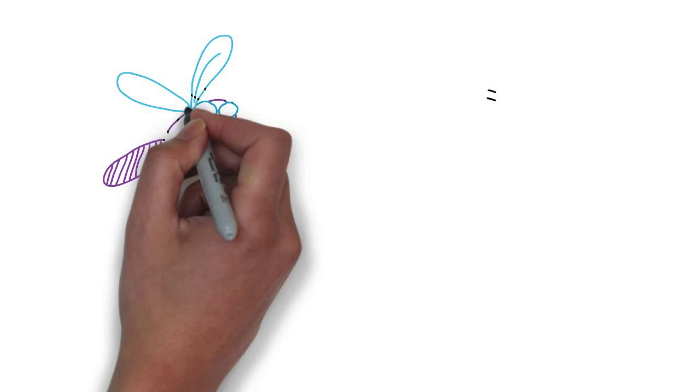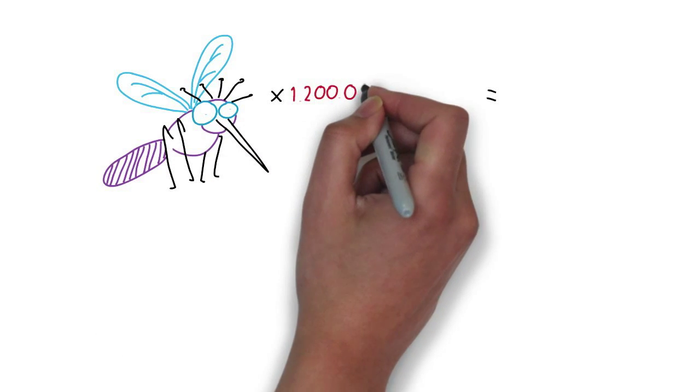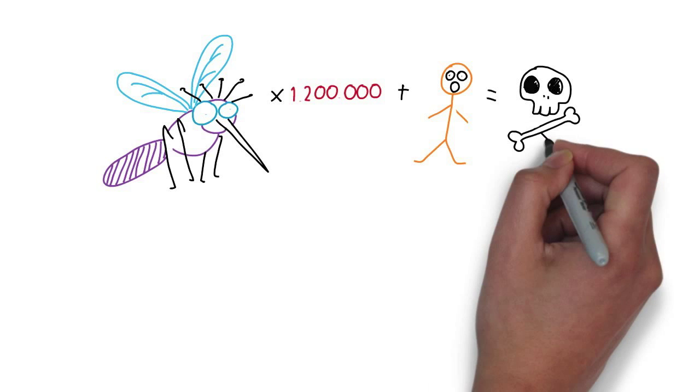Now, let me tell you interesting facts about mosquitoes. It would take 1,200,000 mosquitoes each sucking once to completely drain the average human of blood.